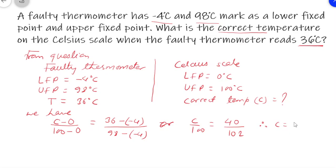Solving this, the correct temperature in the Celsius scale is 39.22 degrees Celsius. So the correct temperature is 39.22 degrees Celsius when the faulty thermometer reads 36 degrees Celsius.